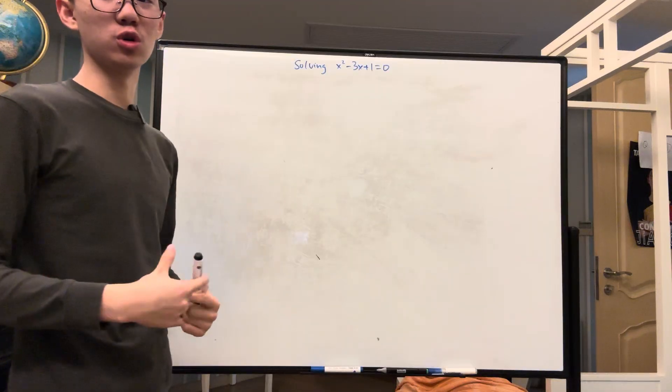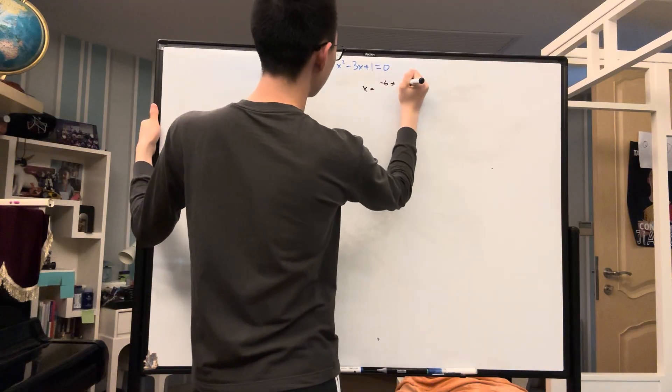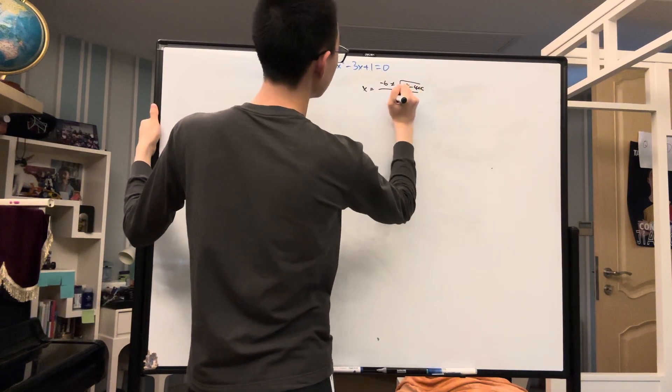Normally, we would solve this by using the quadratic formula, where x is equal to negative b plus or minus root b squared minus 4ac all over 2a.